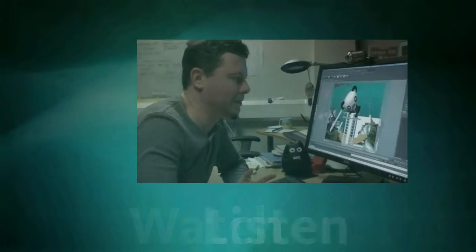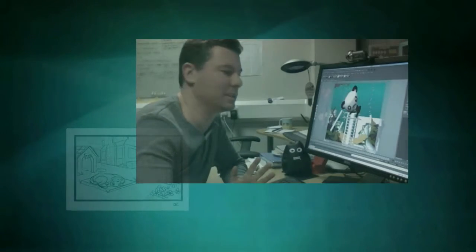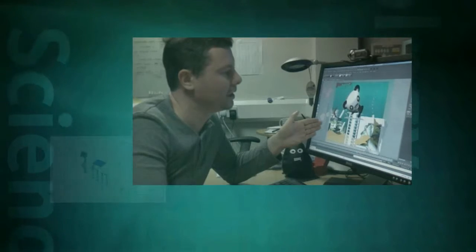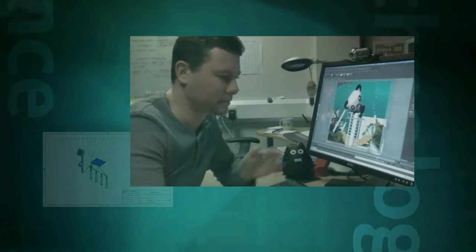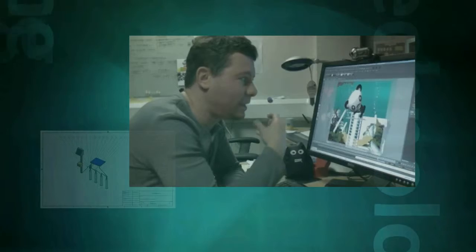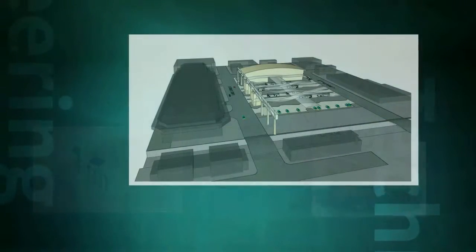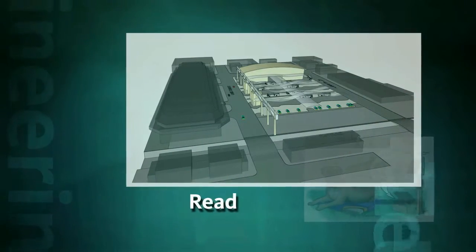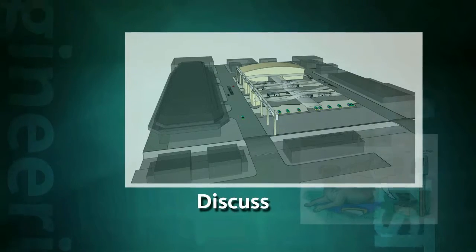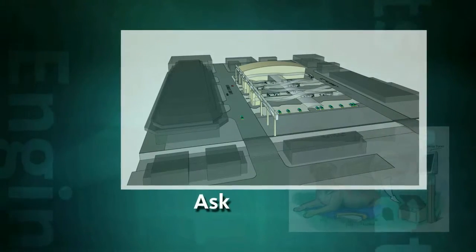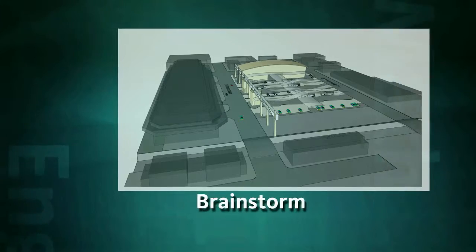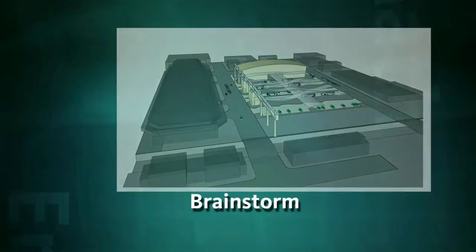Understand — watch and listen. In the first phase of the design thinking process, students learn about the project by understanding what the challenge is through the project design brief and the designer's own words. Have your students read the brief and discuss how the designer solved the problem. Ask how your students might come up with a solution and begin the brainstorming process.